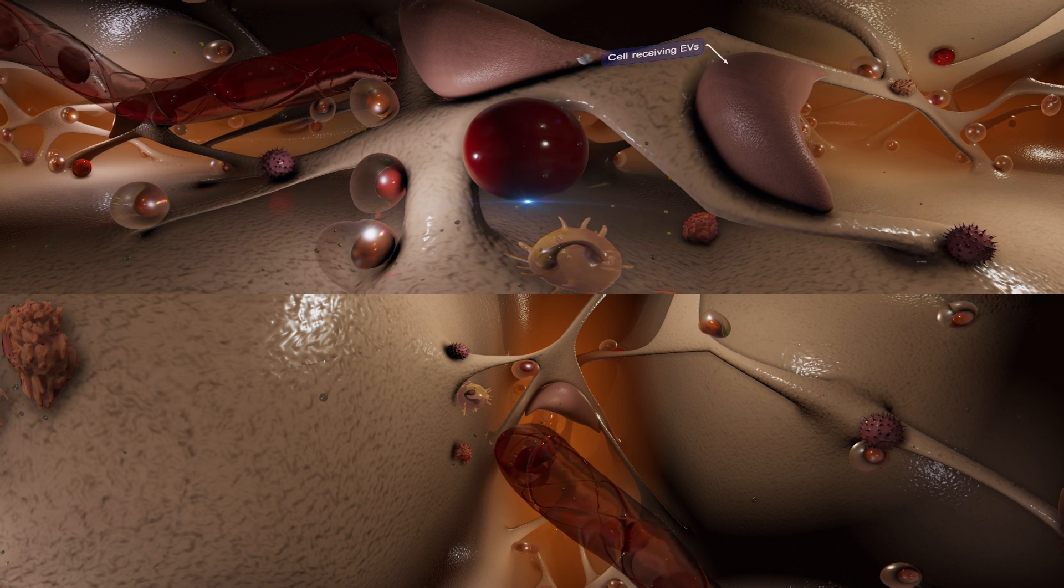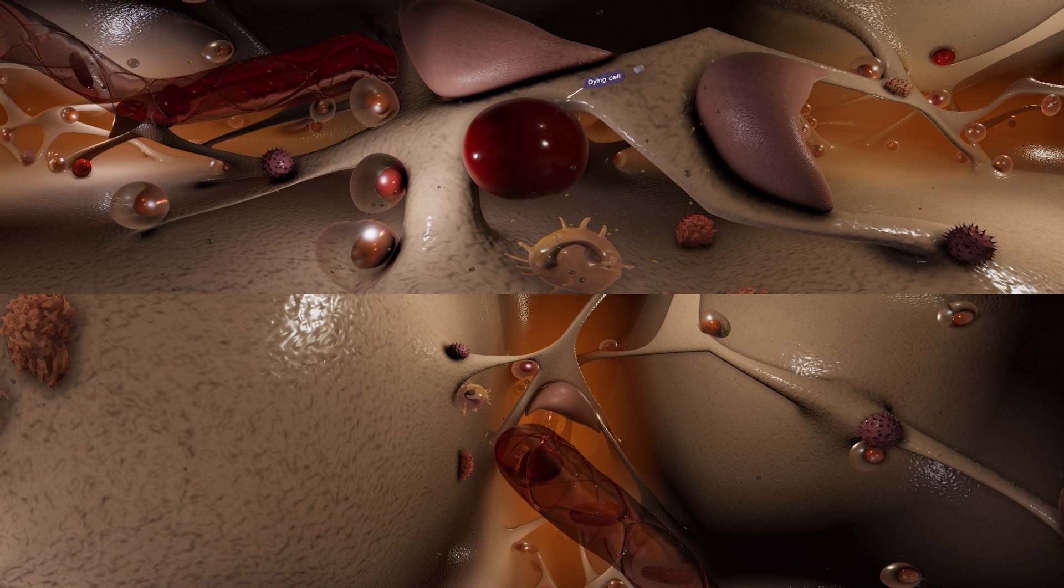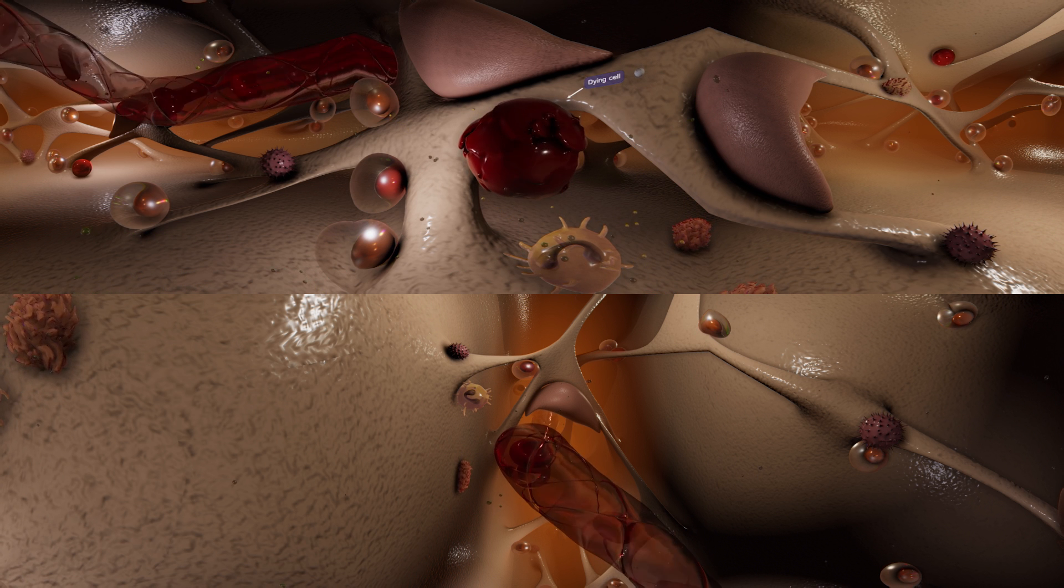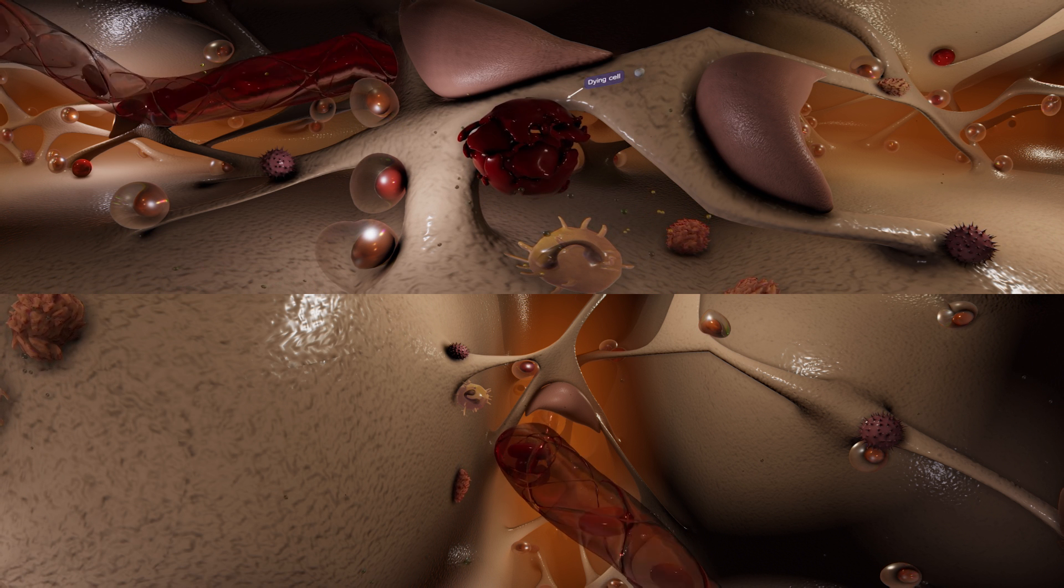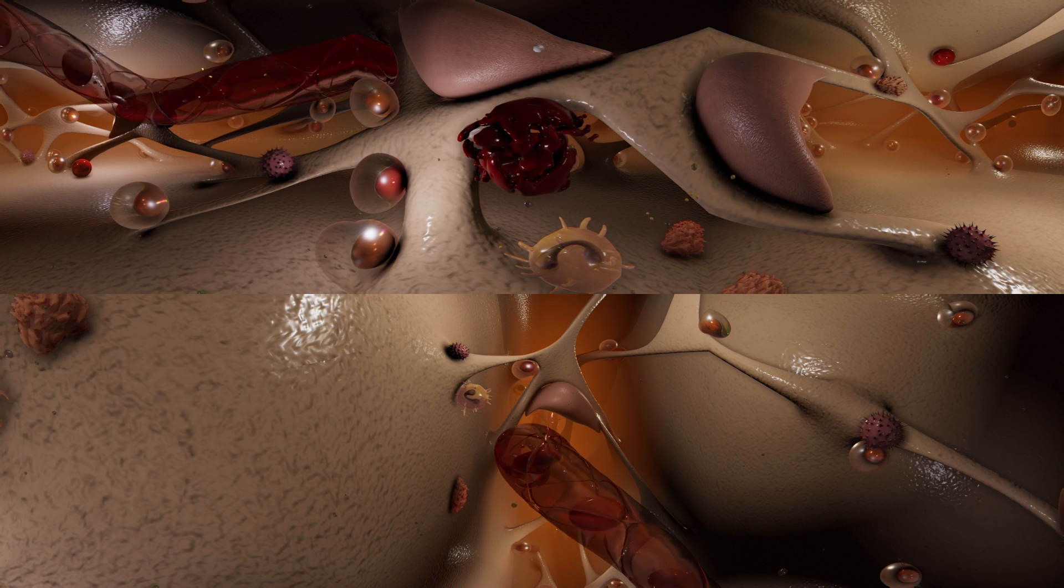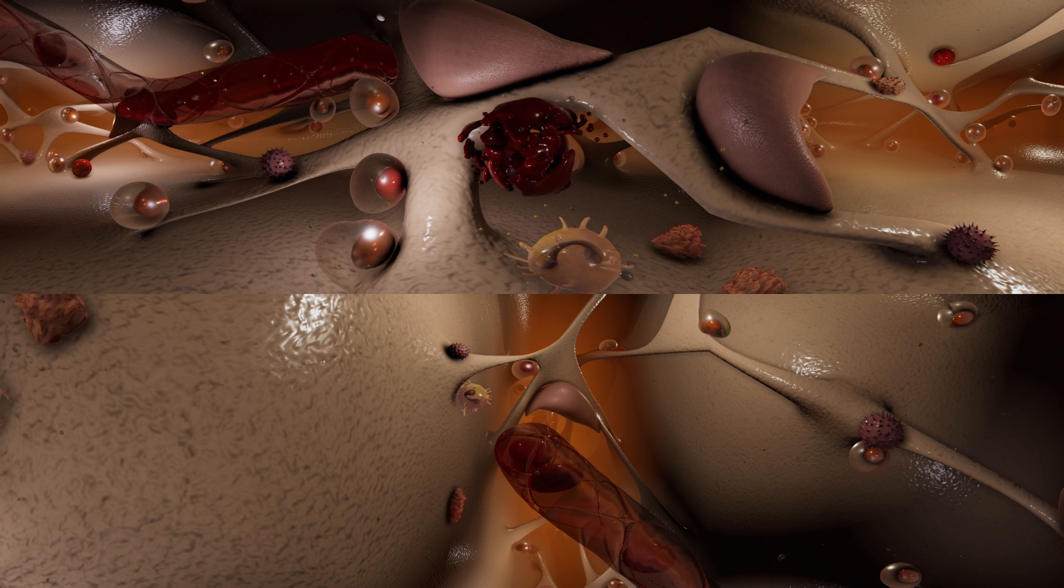The content and number of EVs can change under different conditions, such as during a stress or immune response. Cells undergoing cell death can also release EVs, known as apoptotic bodies and apoptotic microvesicles.